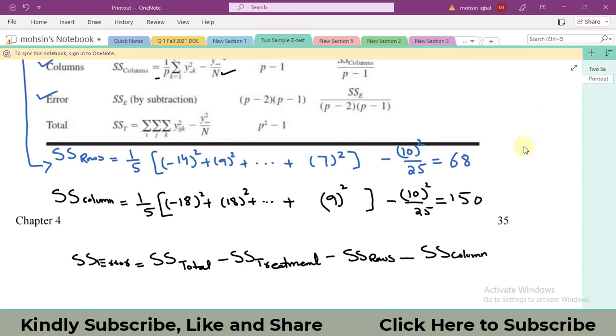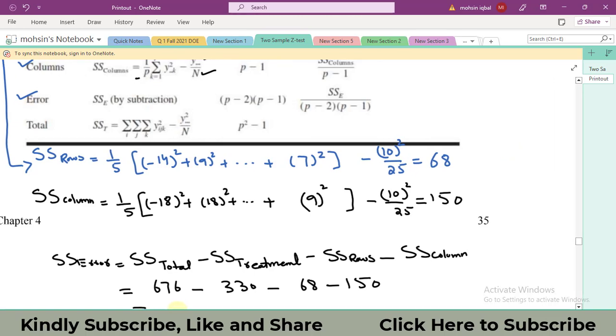So this is the formula for calculating the sum of squares of the error. Let me put all of the values that I got using the calculations: 330 minus 68 minus 150 and I got the result of sum of squares of the error is equal to 128. Please keep in mind that all of these terms are squared values. So this is a hint for you people in the exam as well as in the quizzes assignment that sum of square values can't be ever negative.